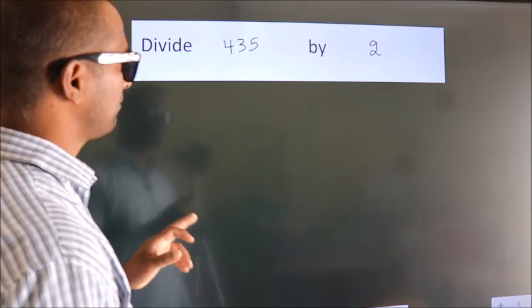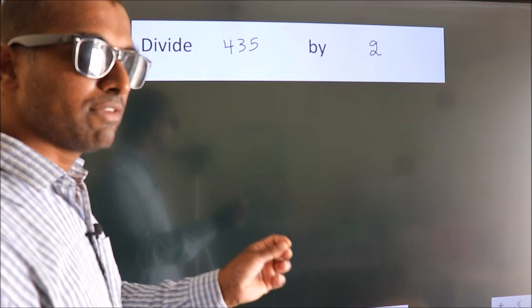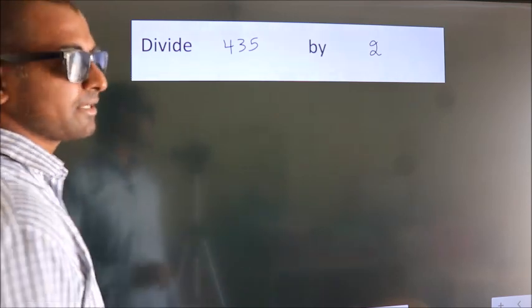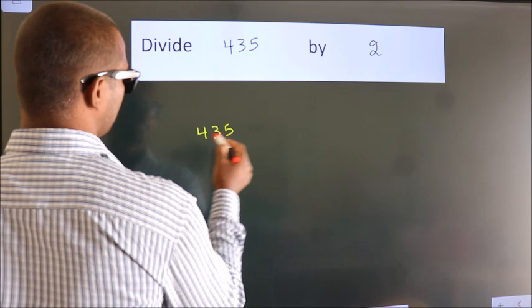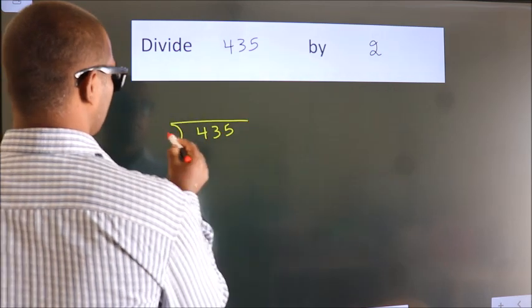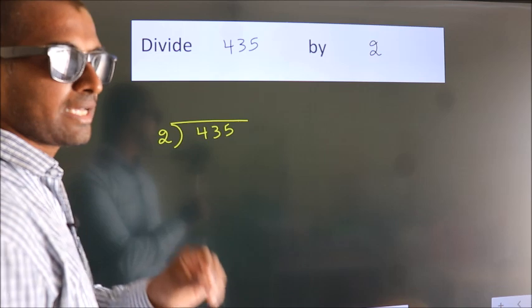Divide 435 by 2. To do this division, we should frame it in this way. 435 here, 2 here. This is your step 1.